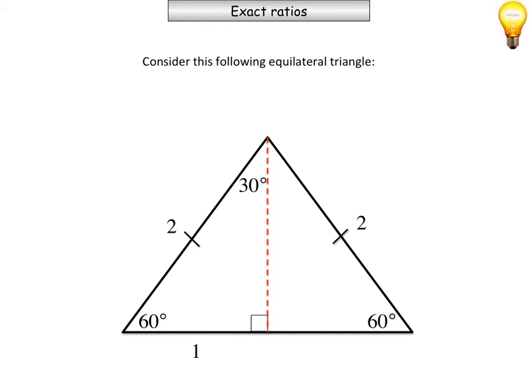Because I'm going to bisect the angle at the top, which means to cut in half. I'm going to have a perpendicular bisector as well. So I've got a right angle down the bottom. And the 60 degree angle at the top has been bisected, so now this is half of 60. So here's 30 degrees.